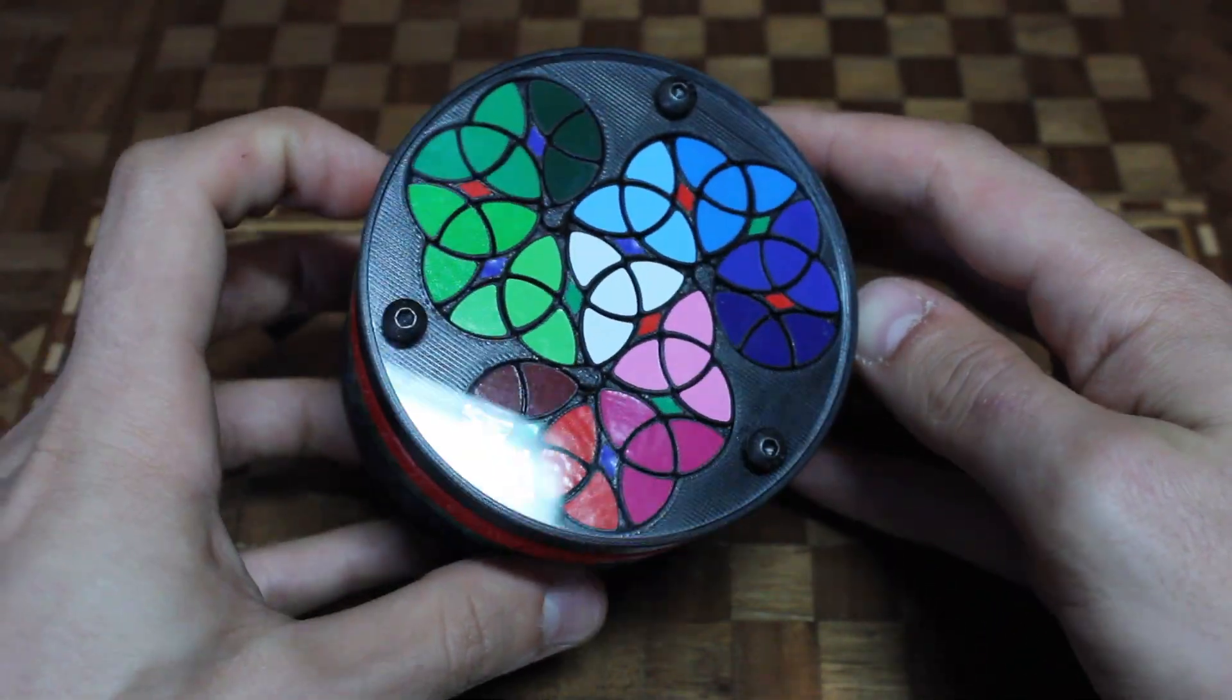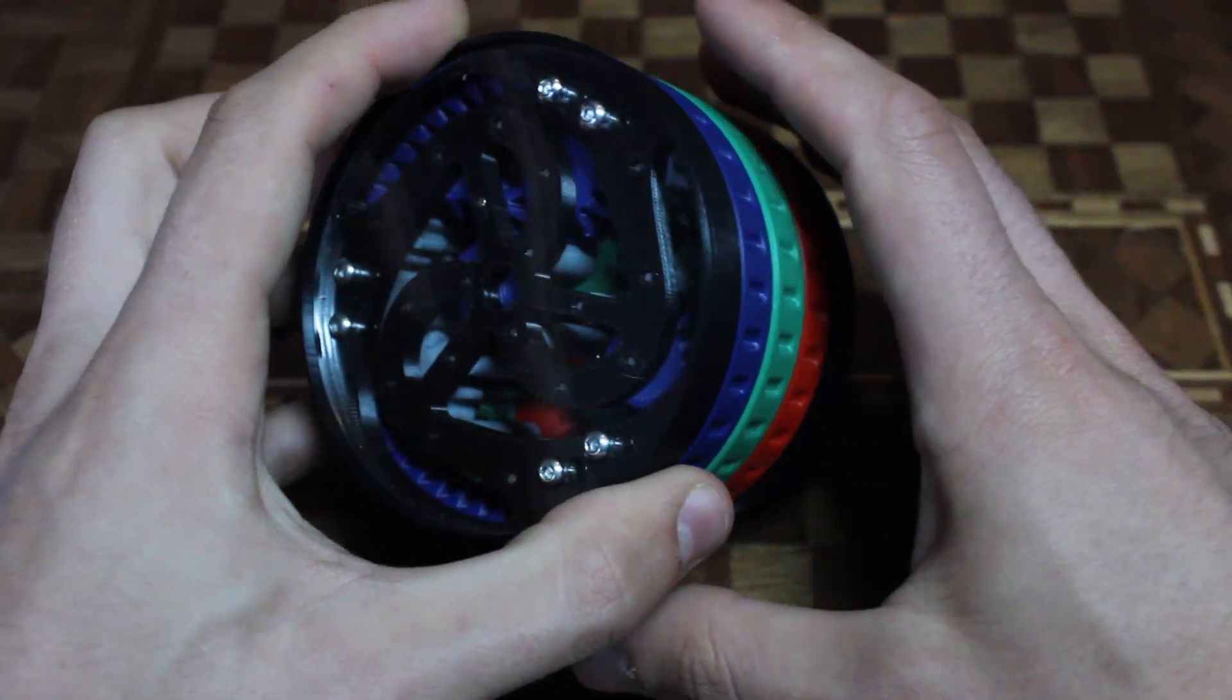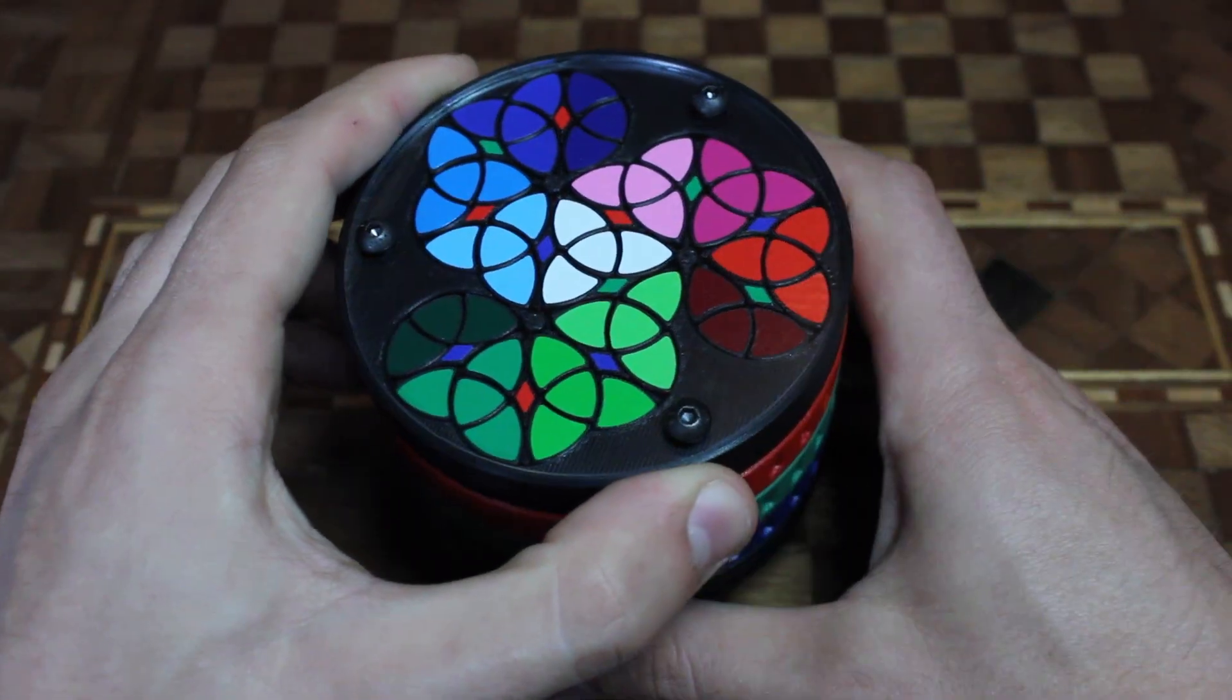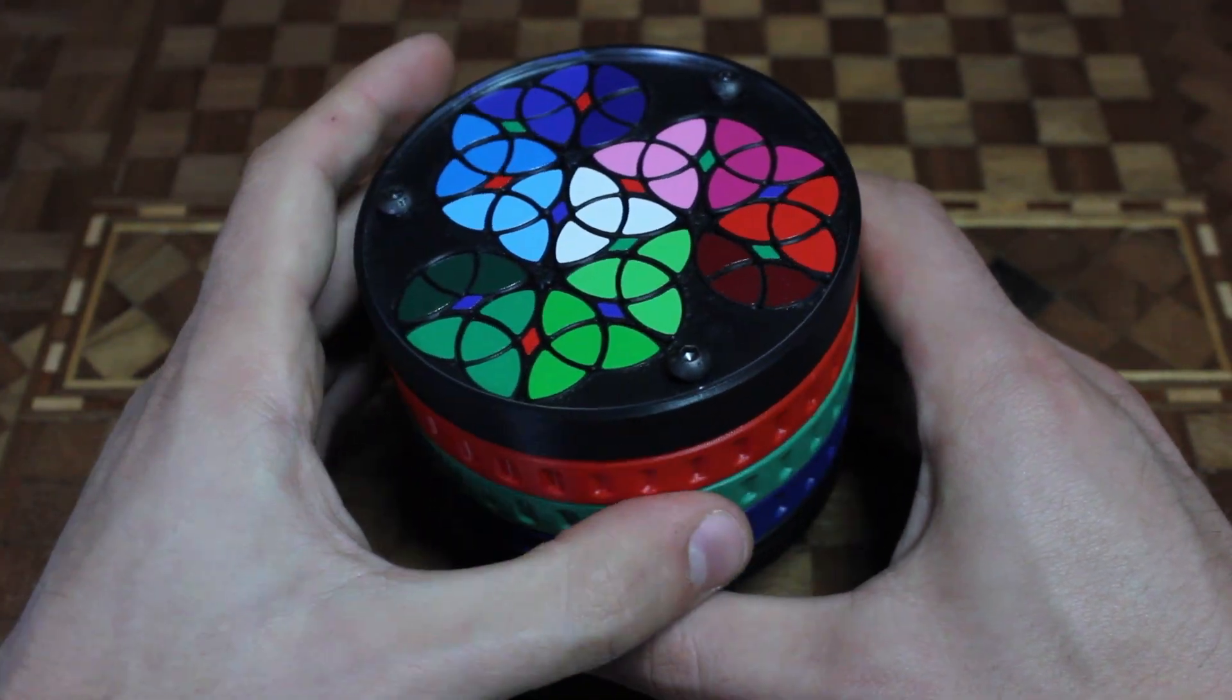The Triskelion Barrel is a geared 2D puzzle that's controlled using three colored rings. Each ring moves four circles on the puzzle's top surface, which are labeled with their corresponding color.